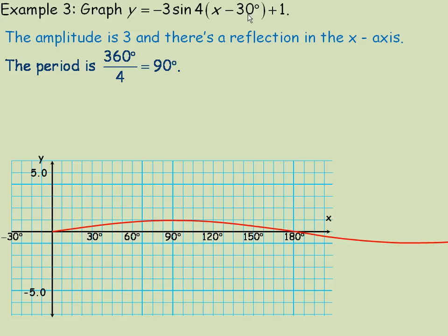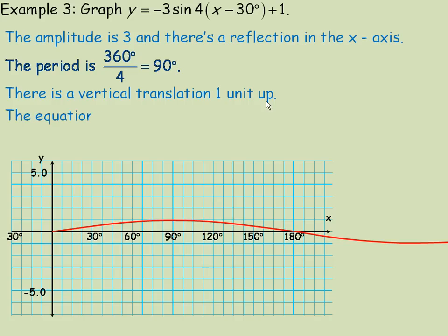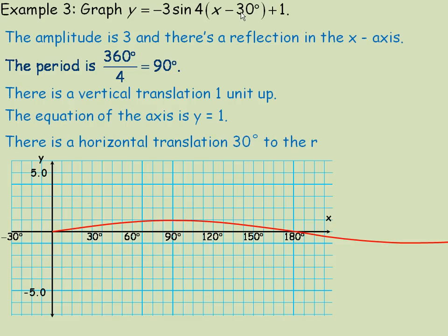The x minus 30 degrees and the plus 1 shift the graph. The plus 1 means it's been moved up 1, so the equation of the axis is y equals 1. The minus 30 degrees means there's been a horizontal translation of 30 degrees to the right. The axis y equals 1 is shown in the middle of the graph.